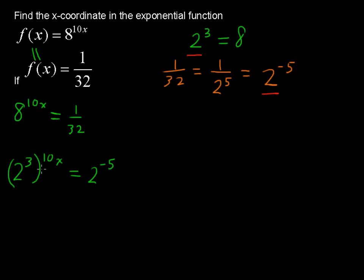So we're going to multiply. When you have a base and its exponent raised to an exponent, you multiply the exponents. So now we have 2^(30x) = 2^(-5).